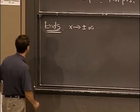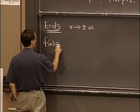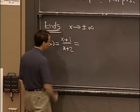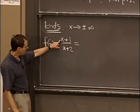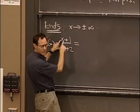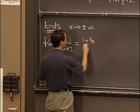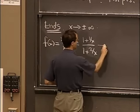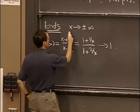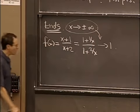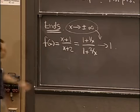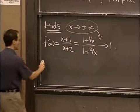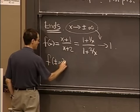The way to do it is to divide by x in numerator and denominator: we get (1 + 1/x)/(1 + 2/x). Then you can see what happens as x goes to plus or minus infinity — it just goes to 1. So no matter whether x is positive or negative, when it gets huge, these extra terms go to 0, and this tends to 1. So f(±∞) = 1.